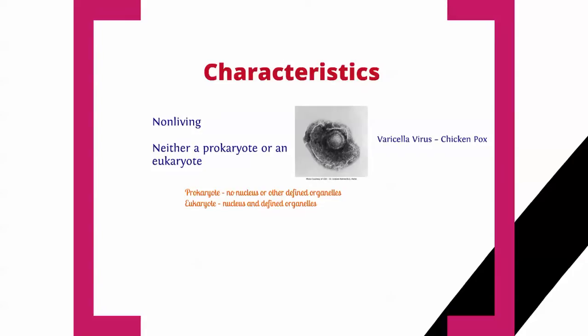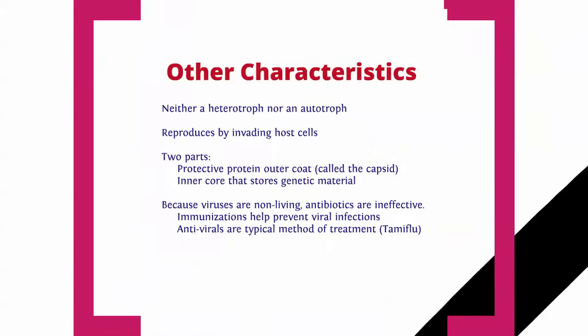Prokaryotes don't have a nucleus or any defined organelles. Eukaryotes have a nucleus and all those organelles you learned in the last unit. Other characteristics of viruses: since they're not living, they're neither a heterotroph nor an autotroph. They reproduce by invading host cells. They're made up of two basic parts: a protective protein outer coat called a capsid, and an inner core which stores the genetic material — the DNA.